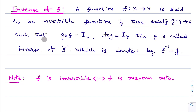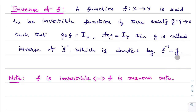Such that g∘f = iX and f∘g = iY, then g is called the inverse of f, denoted as f⁻¹ = g.